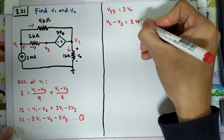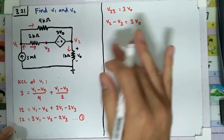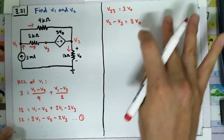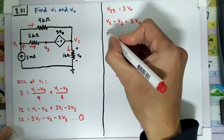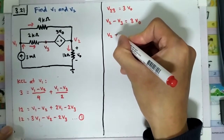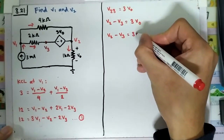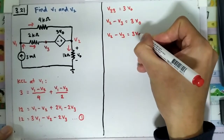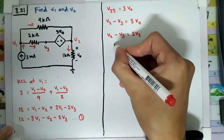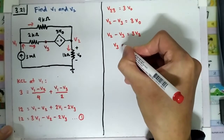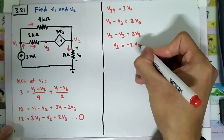Looking carefully, v0 is equal to v2. So we have v2 minus v3 equals 3v2, which gives us v3 equals minus 2v2. We save this as Equation 2.